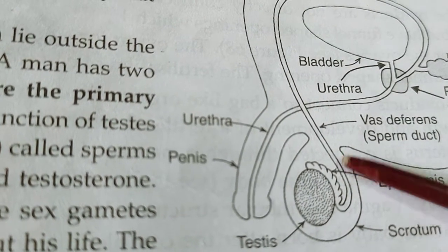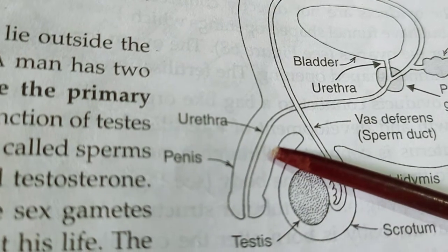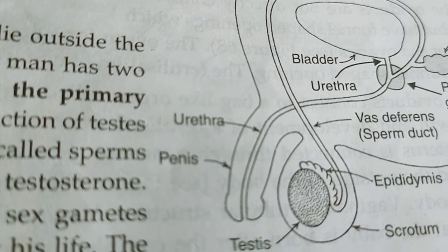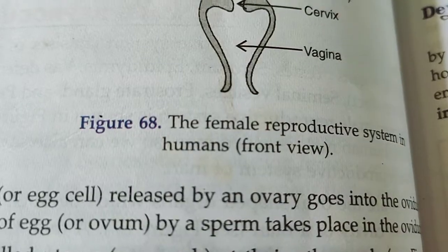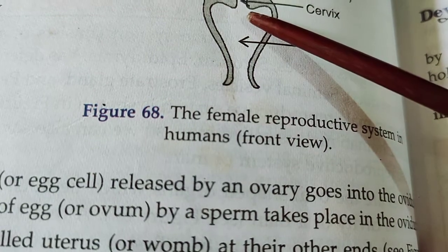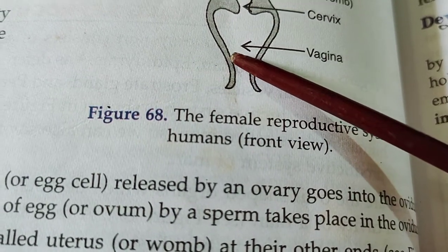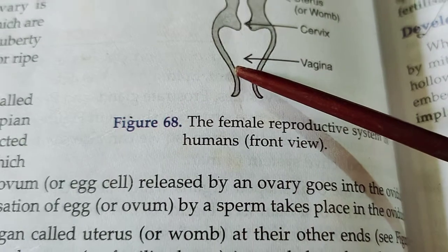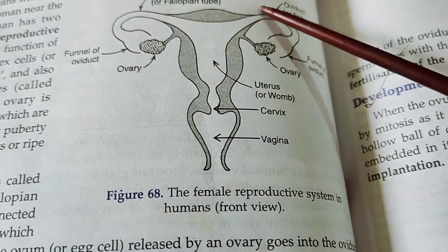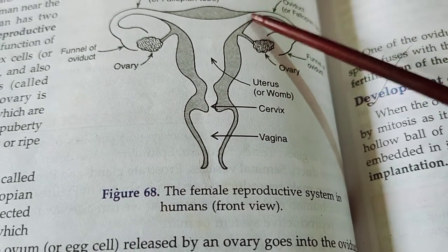During copulation, the penis is the part through which sperms are transferred into the female body. Sperms are transferred into the female body through the vaginal end of the reproductive system. Through the vagina, cervix, and uterus, the sperms finally reach the fallopian tube.